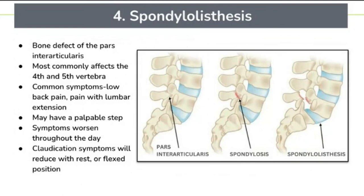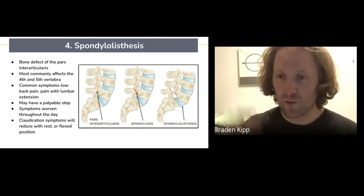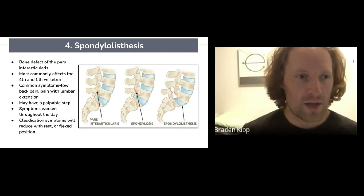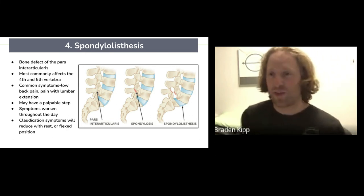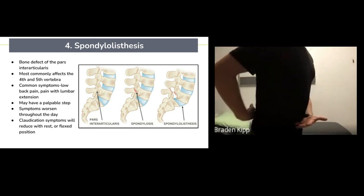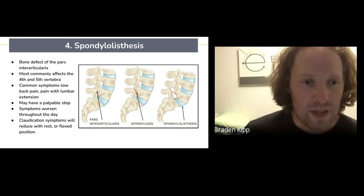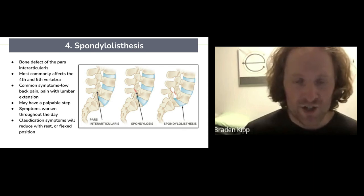Number four is spondylolisthesis. In this one, there's a bony defect in what's called the pars articularis — where the body of your vertebra meets the spinal process. It most commonly affects the fourth and fifth vertebra. Why is it always the fourth and fifth? It has to do with the anatomy and alignment of the spine. There's a lot more loading and force there, and the canal that the nerve root comes out of is actually smaller relative to the nerve size. Common symptoms include low back pain and pain with extension, which makes it feel worse. You might even be able to see a little step deformity in your front or back, which is really common with this condition.